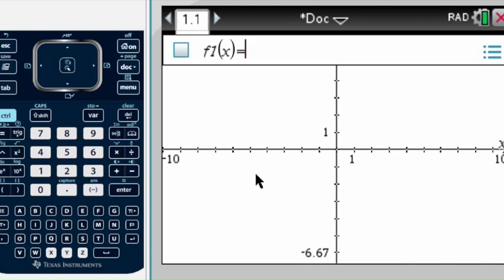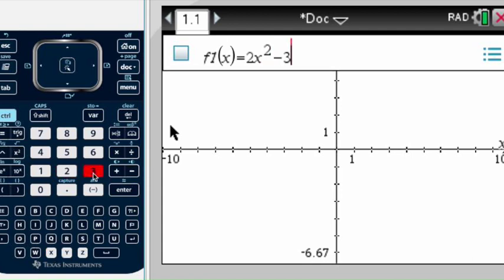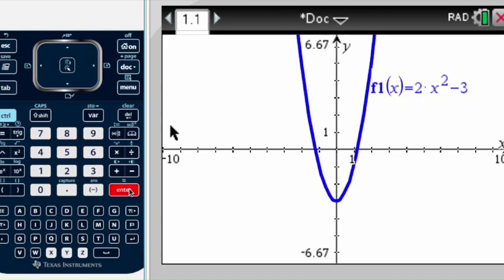The first thing you need to do is put in your equation or function. If you do not have it, you will not be able to do this. You have to use the function form of your equation - if you use any other form like relation, this will not work. Let's say the function I have today is 2x to the second power minus 3. Press enter and you will see your graph.